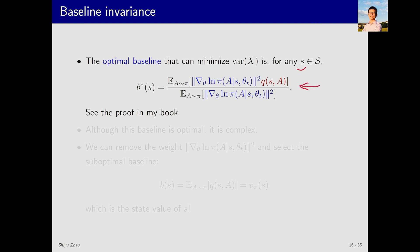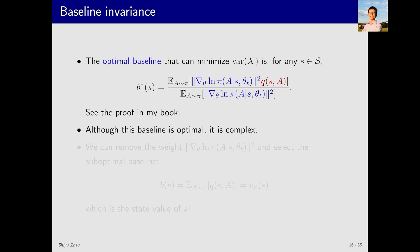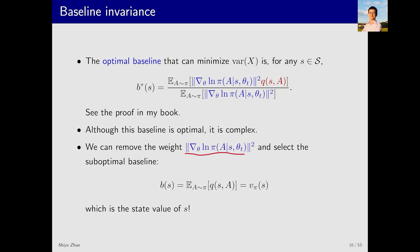What is the best baseline? It is given by this expression, meaning that for any state S, the optimal baseline should equal this. With this baseline, the variance of the resulting X will be minimized. It is a little complex, with expectations in both the numerator and the denominator. The blue part represents a weight involving the gradient of log pi, taking the norm and squaring it. The red part corresponds to the action value Q(S,A). Although this baseline is optimal, it is too complex. What we often do is simplify it by removing the weight and directly calculating the expectation of Q — which is simply V_pi(S), the state value of S.